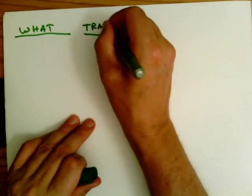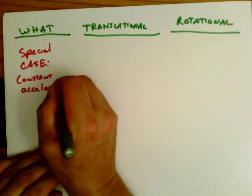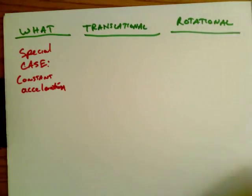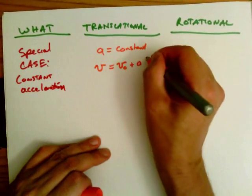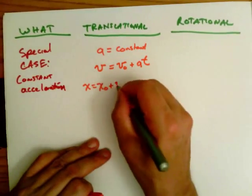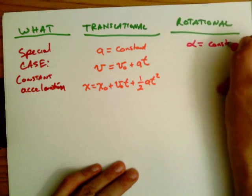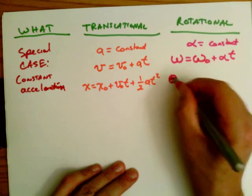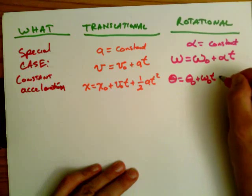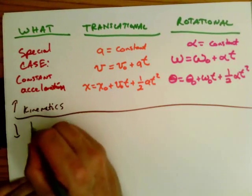Now that I have the tools for kinematics, I can handle the special case of constant acceleration. In the analogy table: for translational motion with constant acceleration a, we have v = v₀ + at and x = x₀ + v₀t + ½at². Rotationally, if alpha is constant, then ω = ω₀ + αt and θ = θ₀ + ω₀t + ½αt². The rotational kinematic equations are completely analogous to the translational ones.